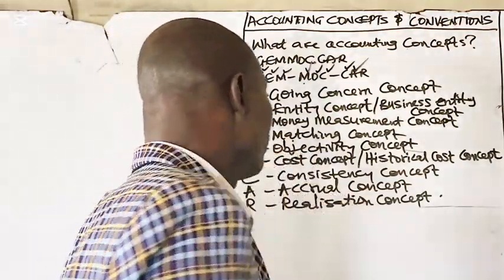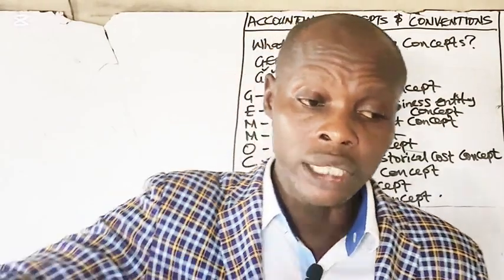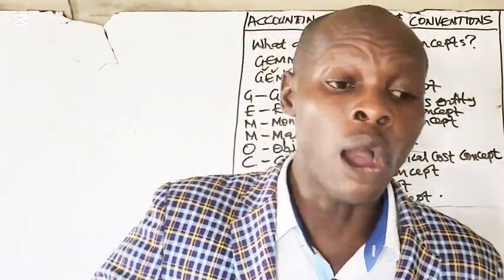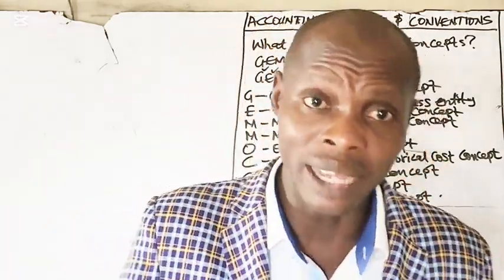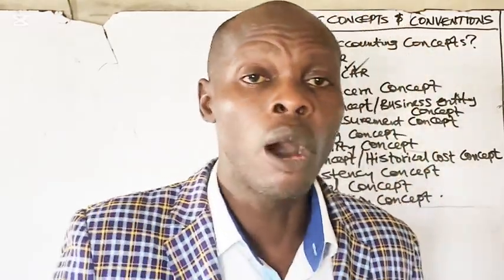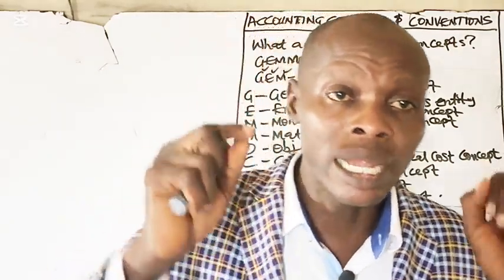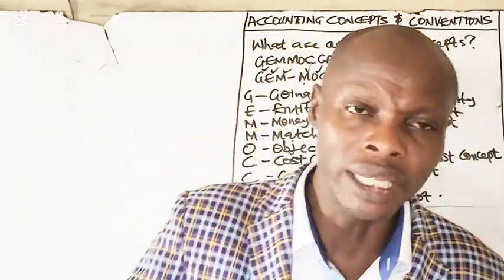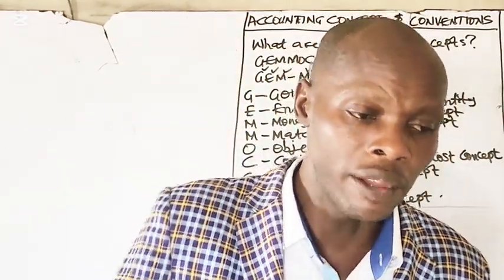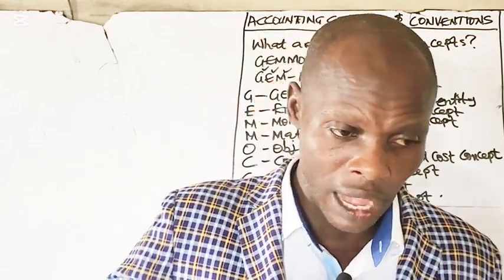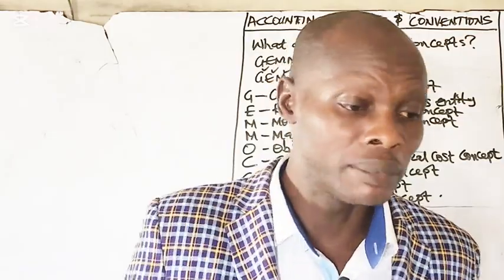Number five: objectivity concept. This states that accounting records must be based on verifiable evidence — evidence you can verify, such as invoices, receipts, bank statements, etc.